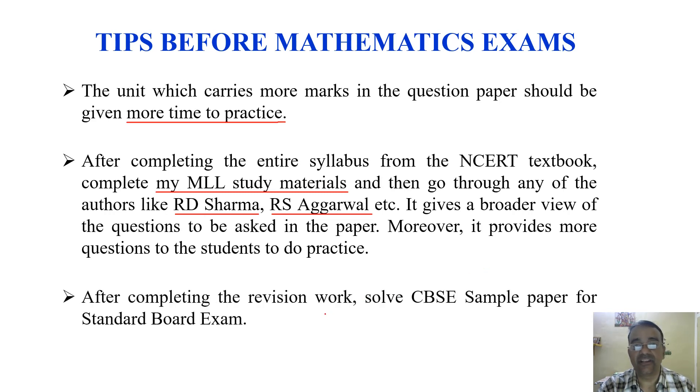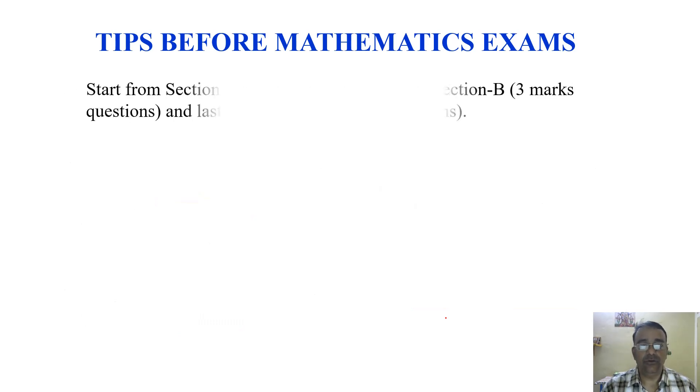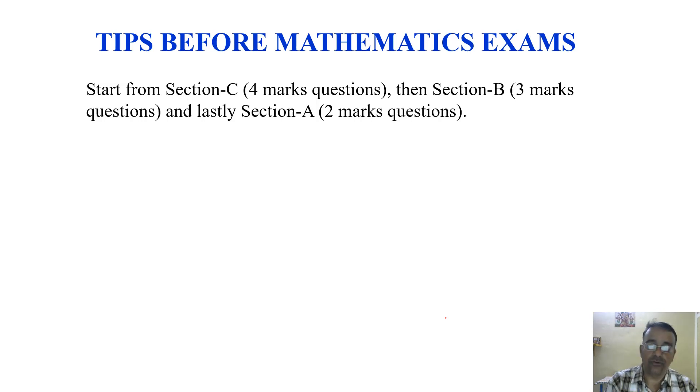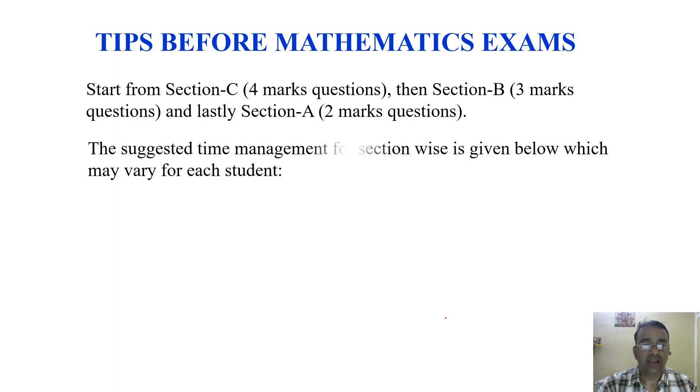After completing the revision work, now solve CBSE sample paper for board exam which was published by CBSE. Now start from section C, that is 4 marks questions and then section B, 3 marks questions and lastly section A, 2 marks questions. And if you are not comfortable with this sequence, you can go reverse also A, B, C. And the suggested time management for section wise is given below which may vary for student to student.